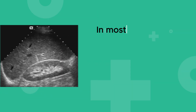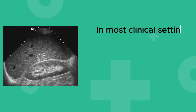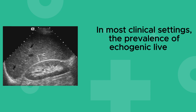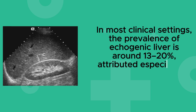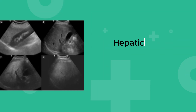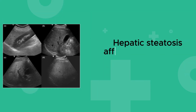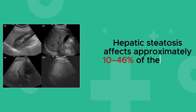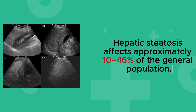In most clinical settings, the prevalence of echogenic liver is around 13–20%, attributed especially to hepatic steatosis, or fatty liver disease. Hepatic steatosis affects approximately 10–46% of the general population.